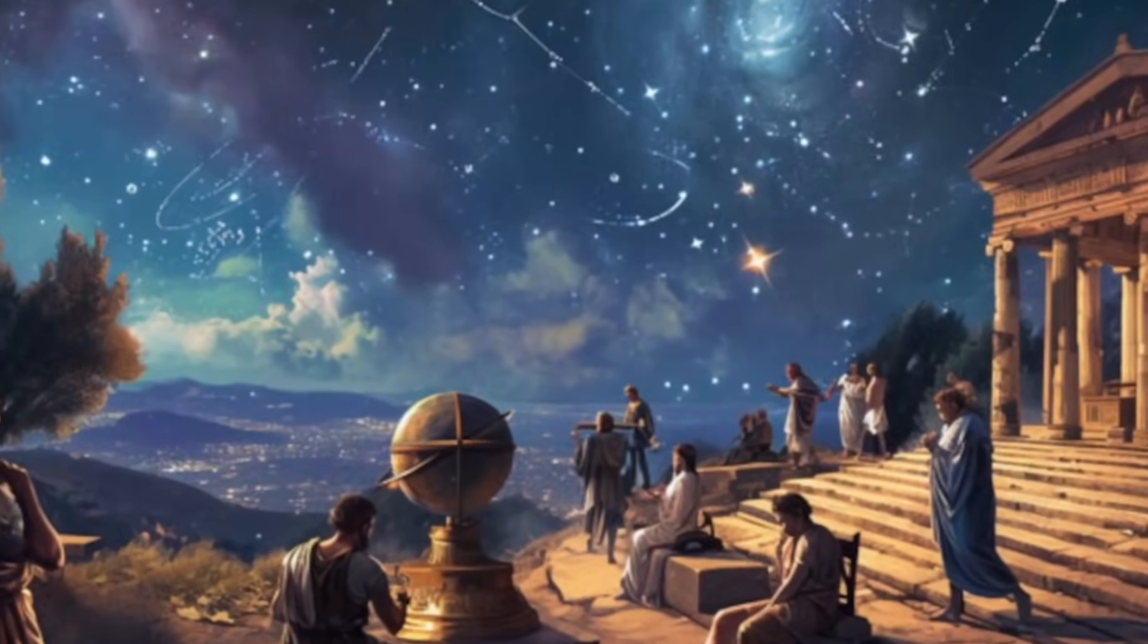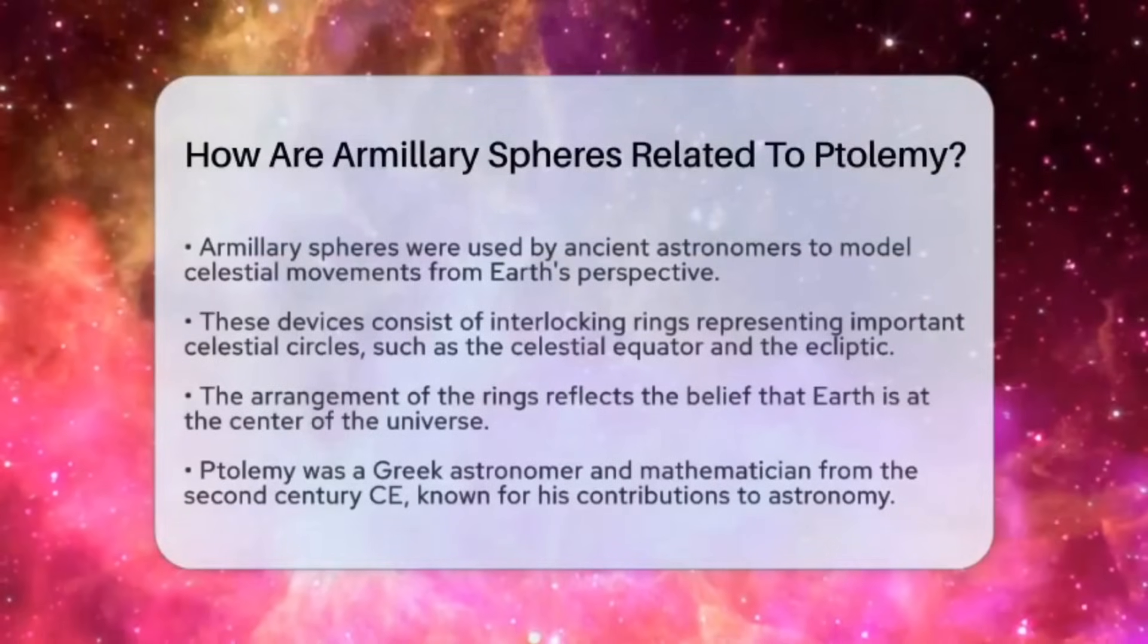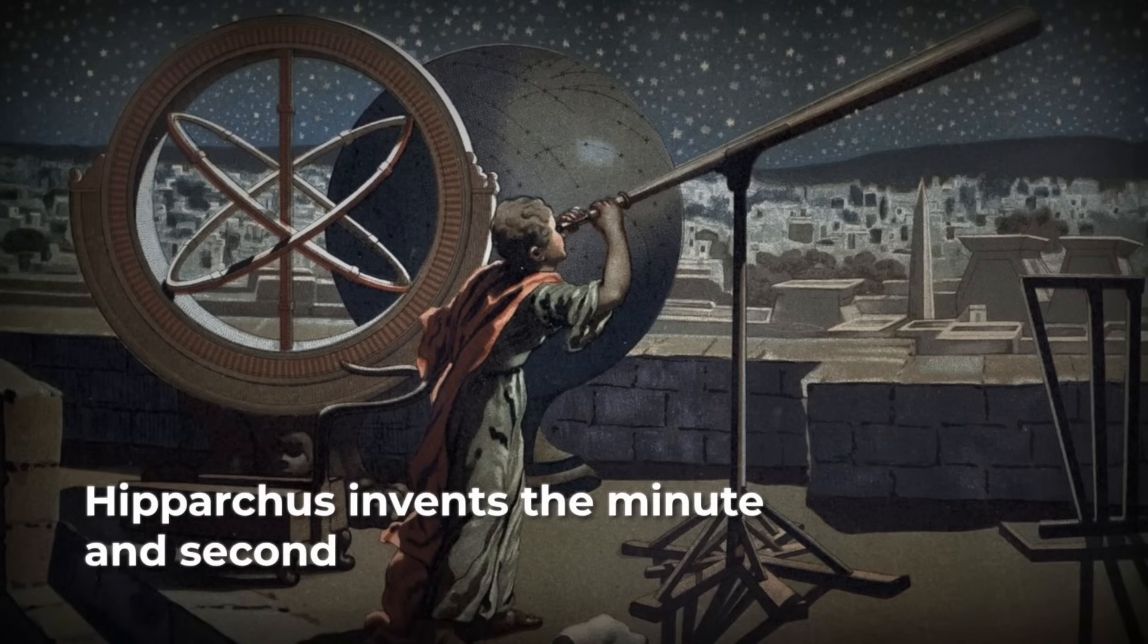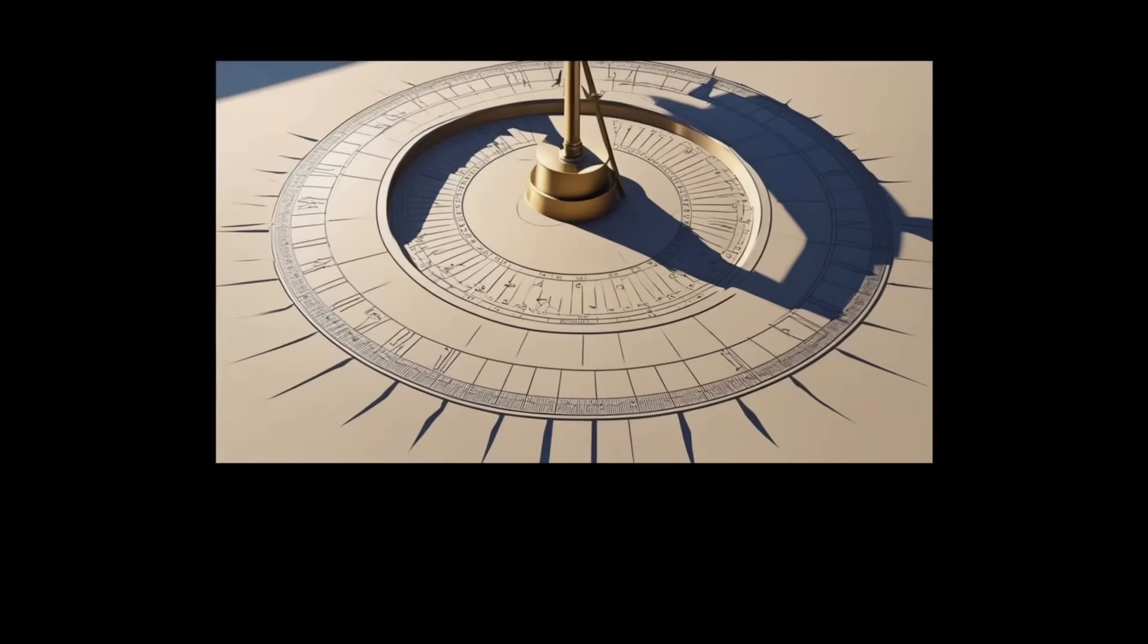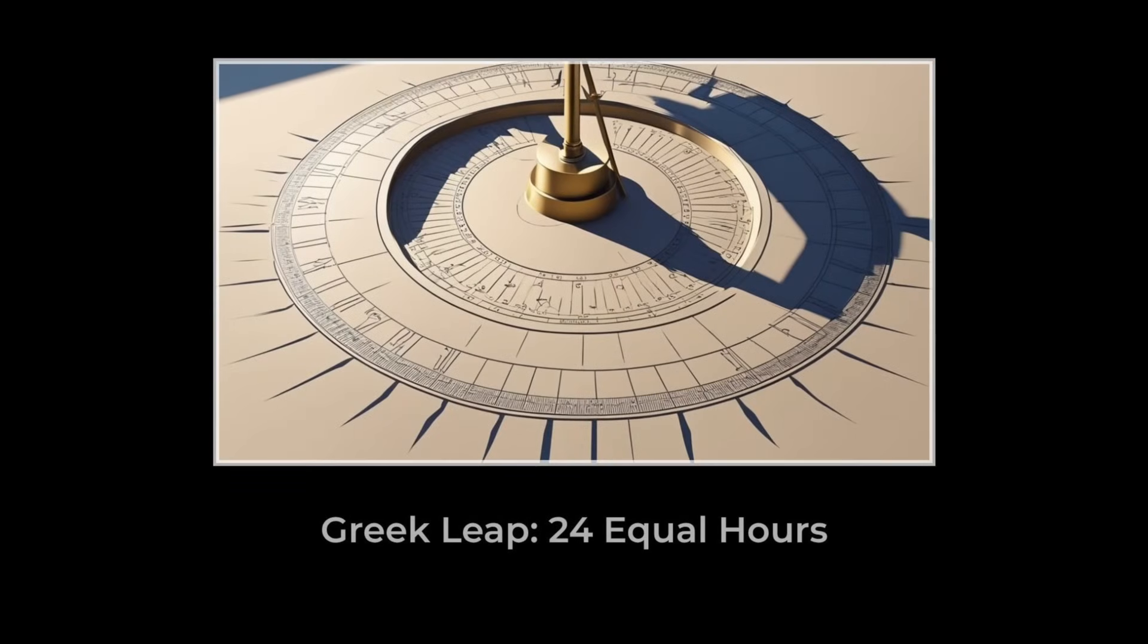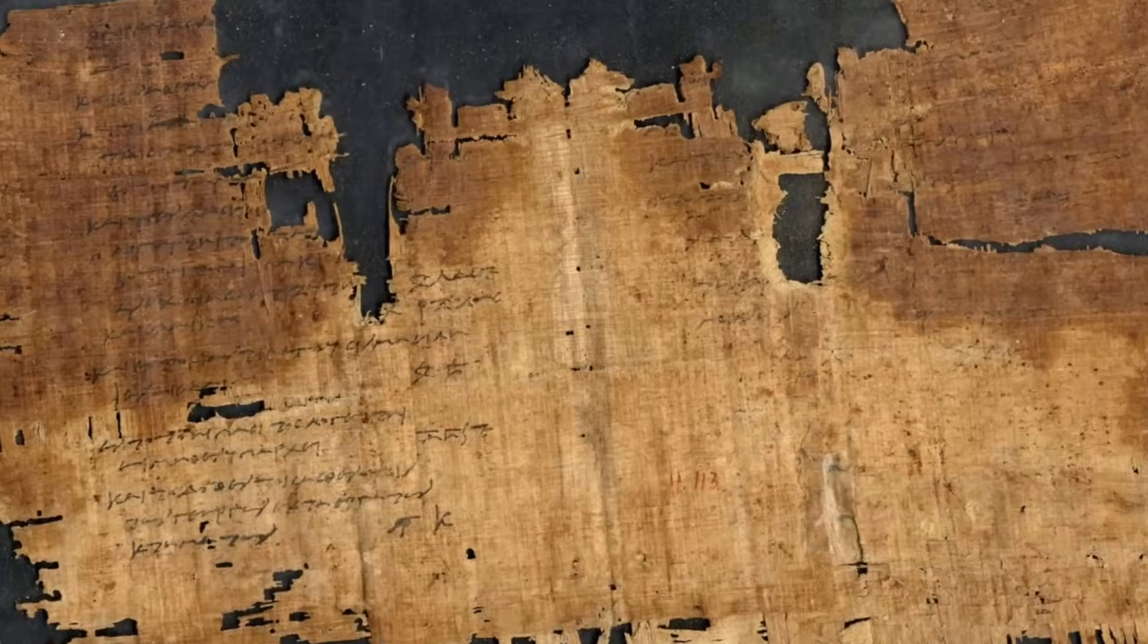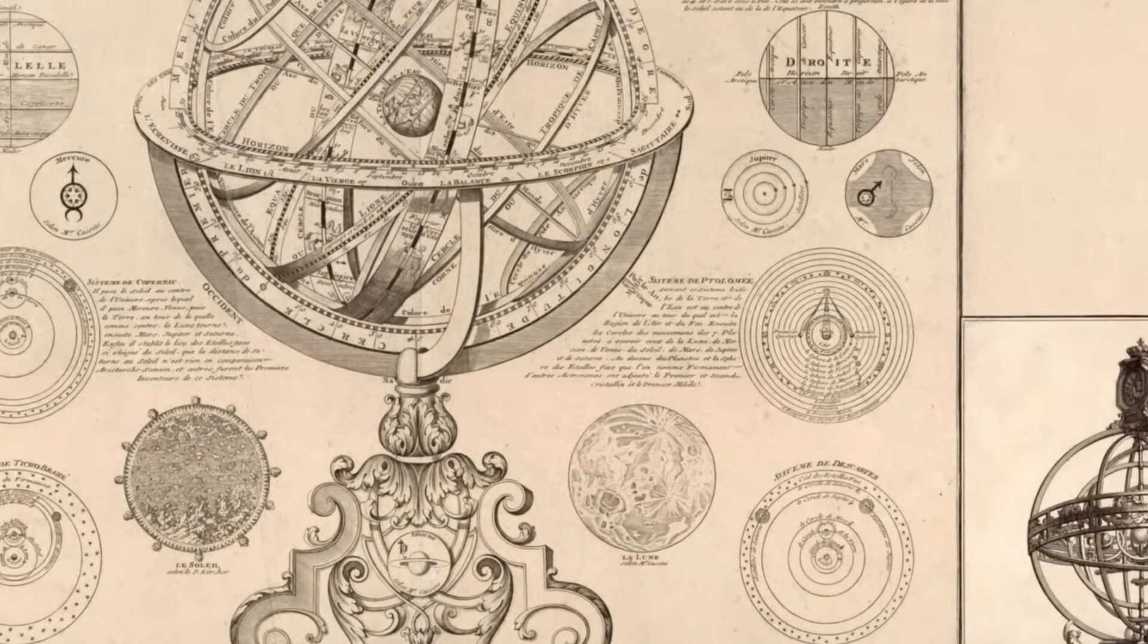Greek astronomers faced a puzzle that numbers alone could not solve. How to bring order and precision to the shifting patterns of the sky. Hipparchus, working in the 2nd century BCE, set out to fix the problem of hours that stretched and shrank with the seasons. He proposed dividing the day into 24 equal parts, equinoctial hours, so that time itself could be measured as steadily as the stars. But even this was not enough for the mathematicians and navigators who needed to pinpoint a star's position, or time an eclipse to the minute.